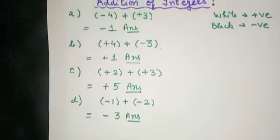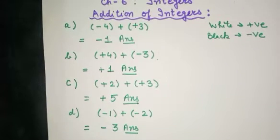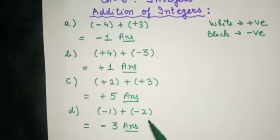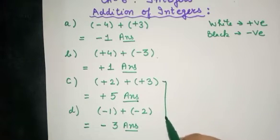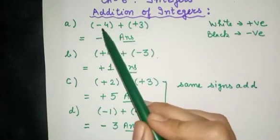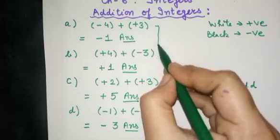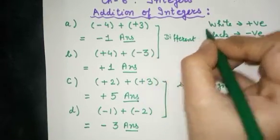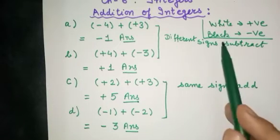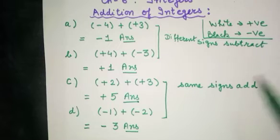Now, we can't do this coin activity every time we solve a sum. So there are some jingles to help you remember the rule. Here it is: same signs add, different signs subtract. Same signs — plus plus, minus minus — you add. Different signs — minus plus, plus minus — you subtract.